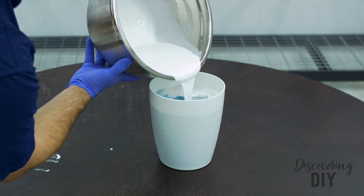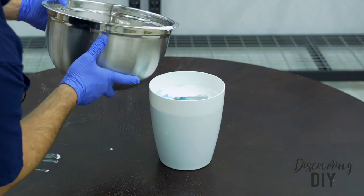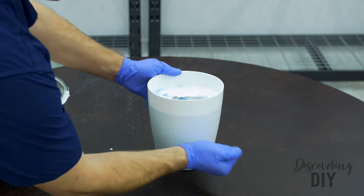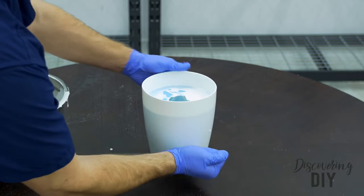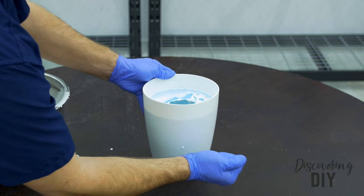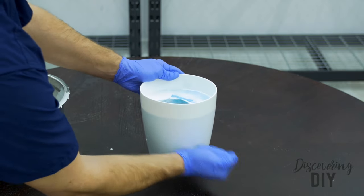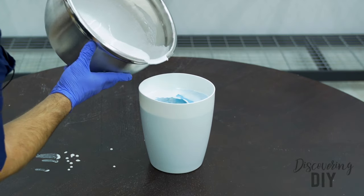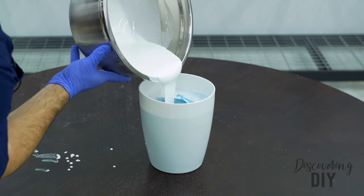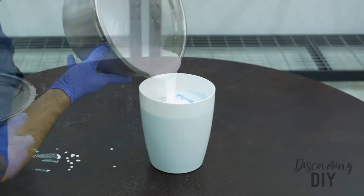Next, pour the casting material back into the mold half a cup at a time. After each half cup is poured into the mold, tap on all sides of the bucket to release air bubbles that may be trapped in the mold. Continue to pour in half cup increments and repeat the process until the mold is filled to the top.